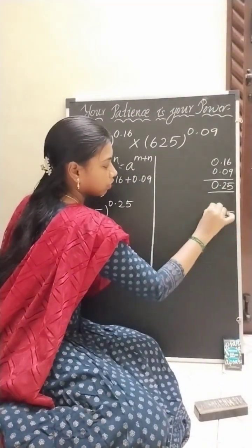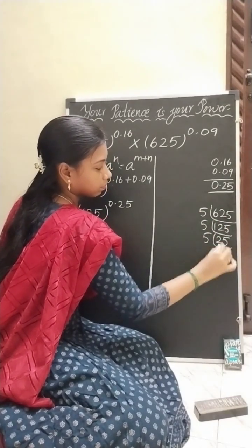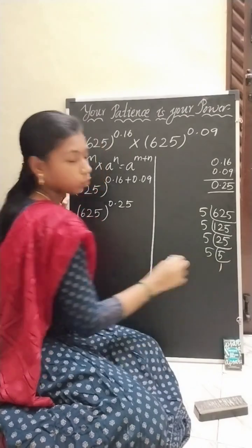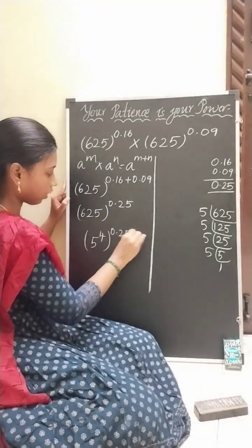So what do you get? 5 to the power 4. Write it as (5^4)^0.25.